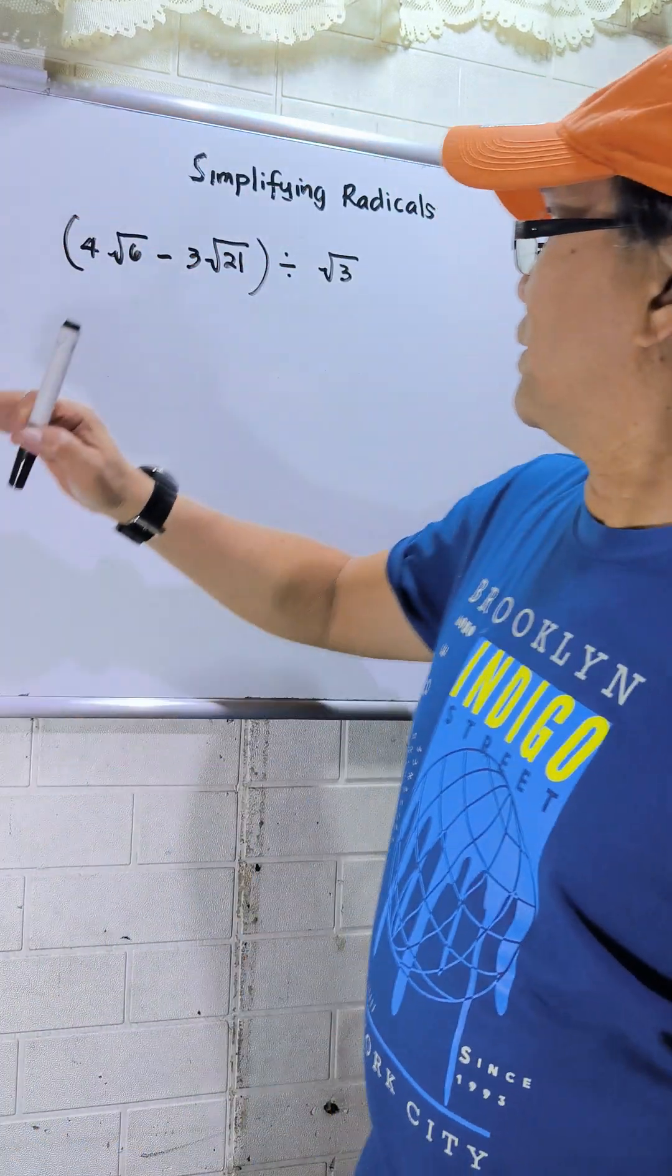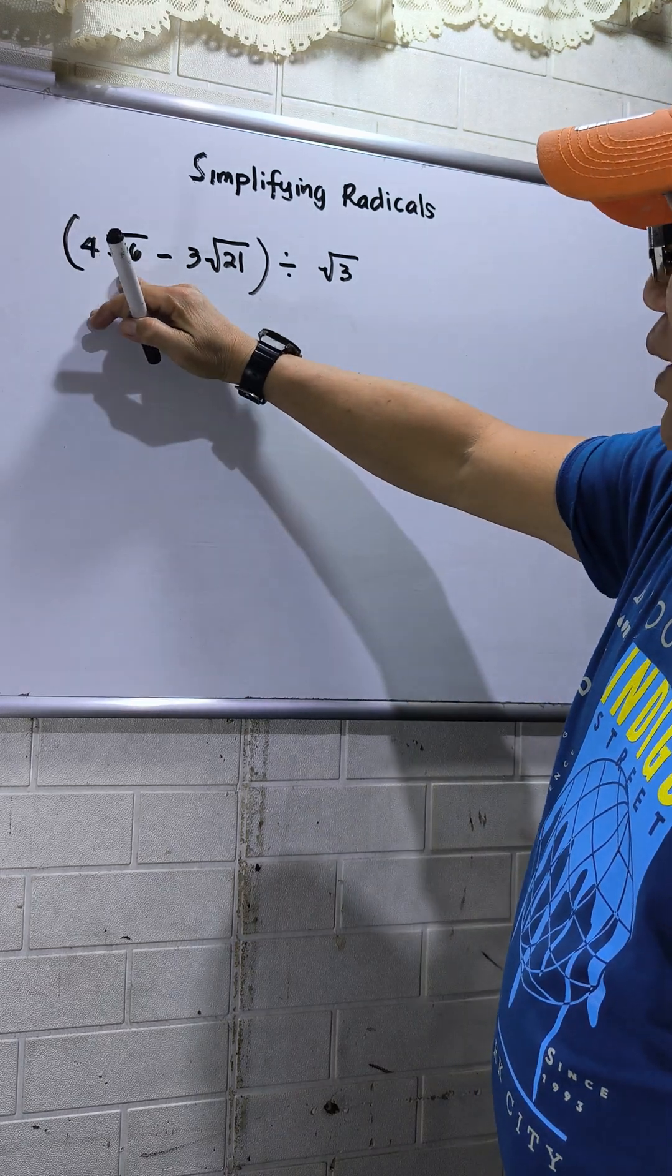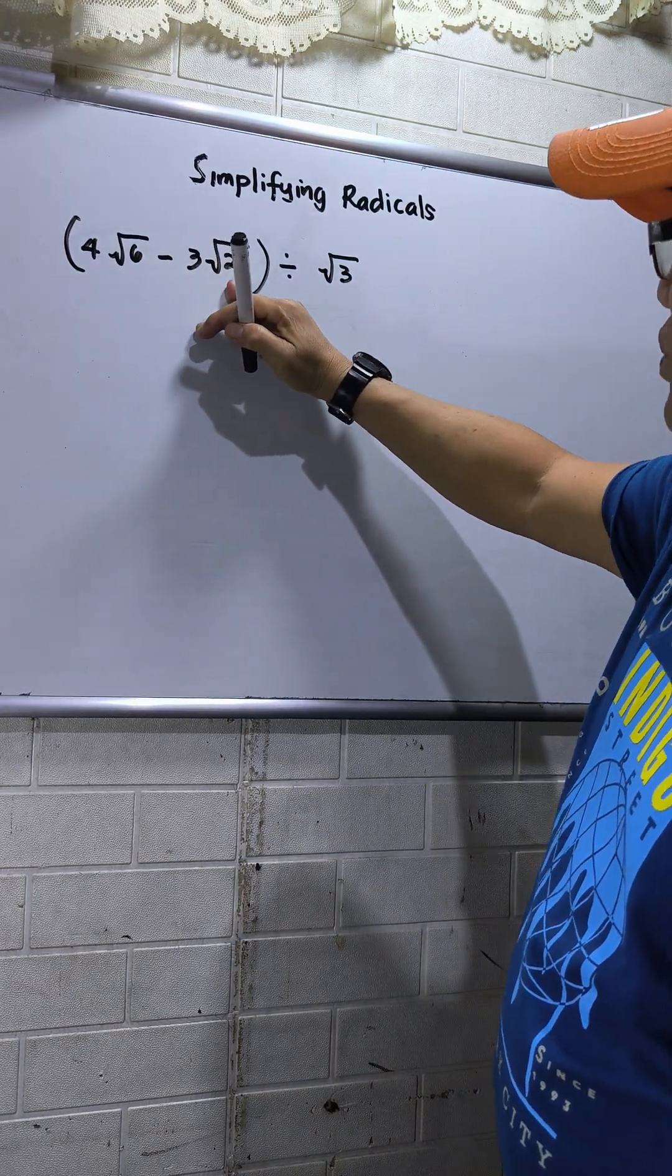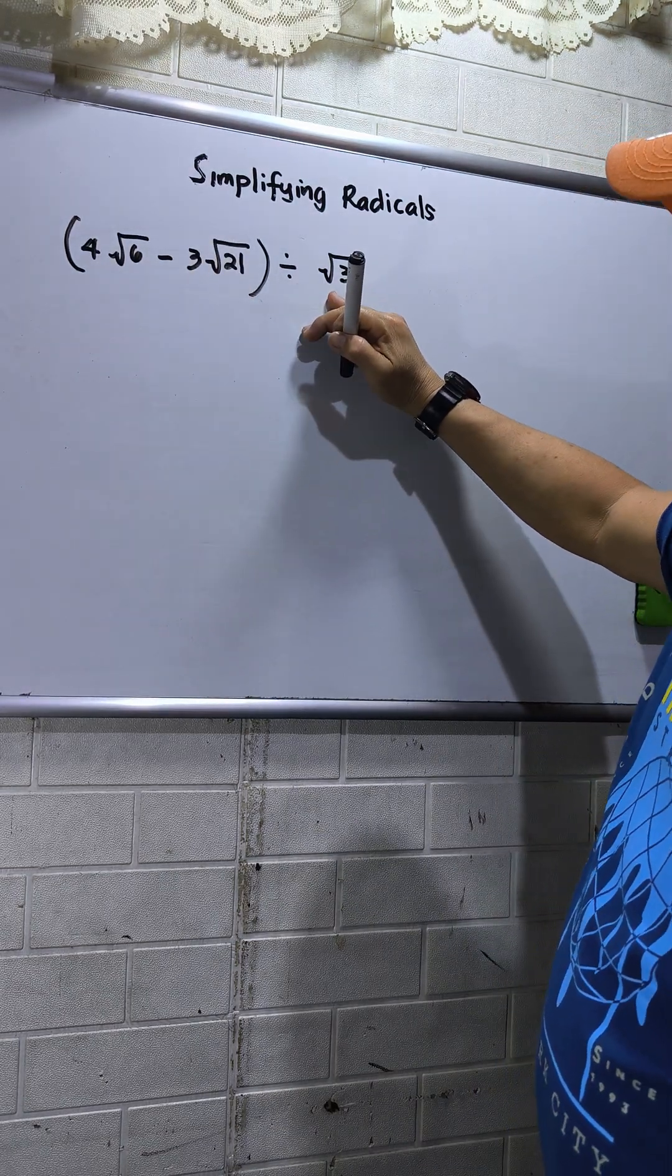So I have here circle brackets: 4 square root of 6 minus 3 square root of 21, divided by square root of 3.